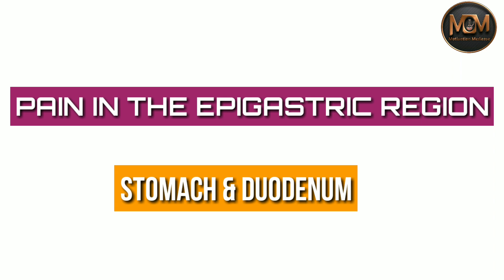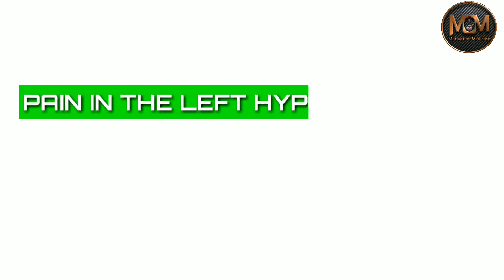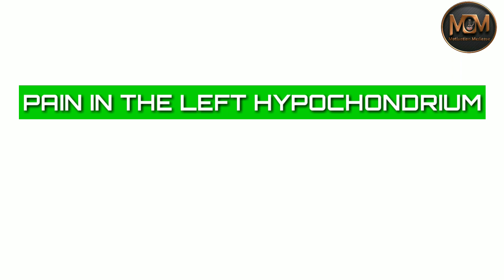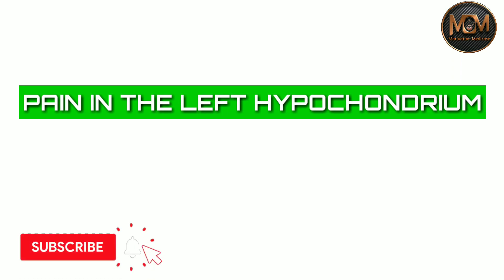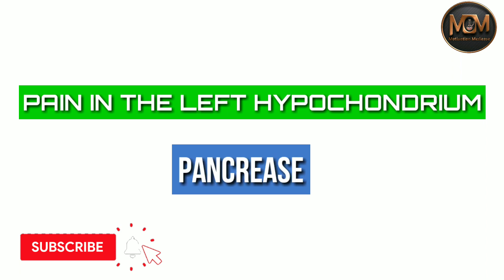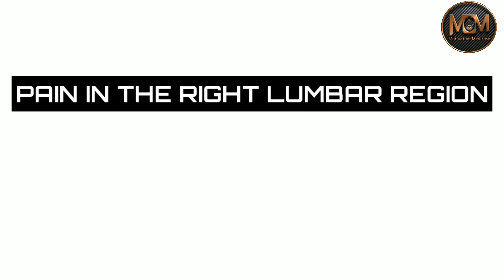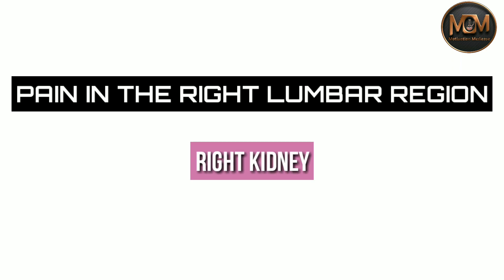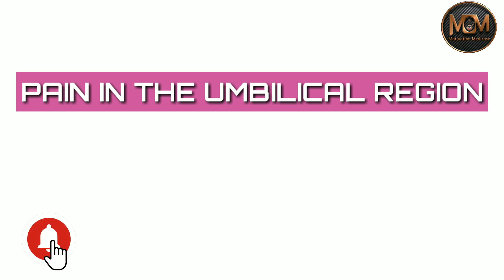Next, pain in the left hypochondrium means it is coming from the pancreas. Moving on to the right lumbar region — when you feel pain in the right lumbar region, it means it is coming from the right kidney. For the umbilical region, when you feel pain there, it means it is coming from the small intestine.